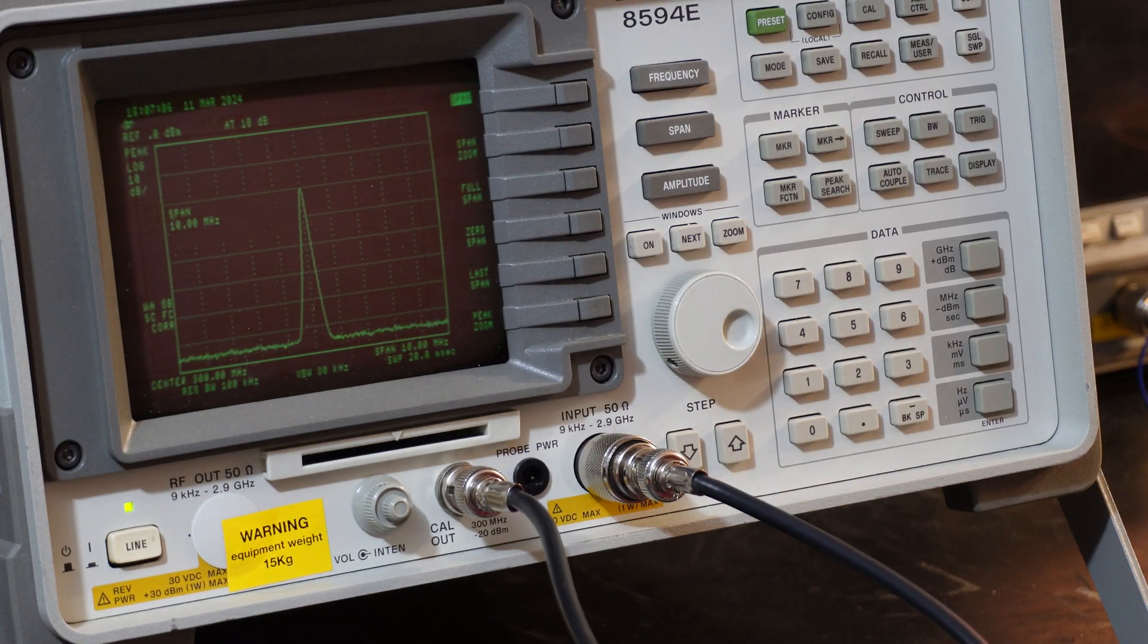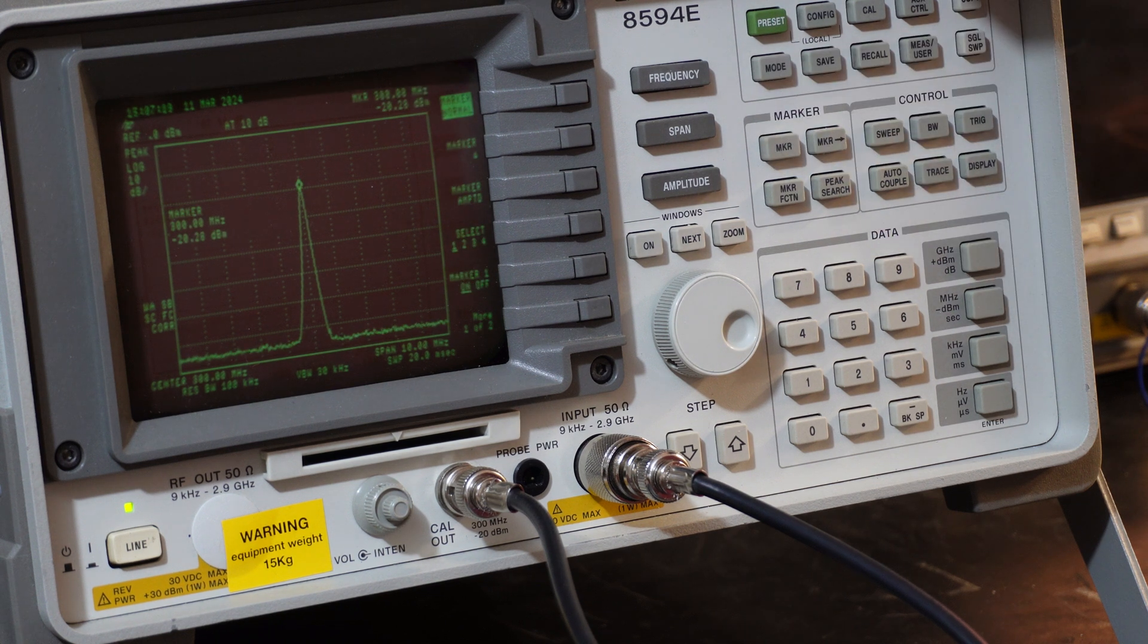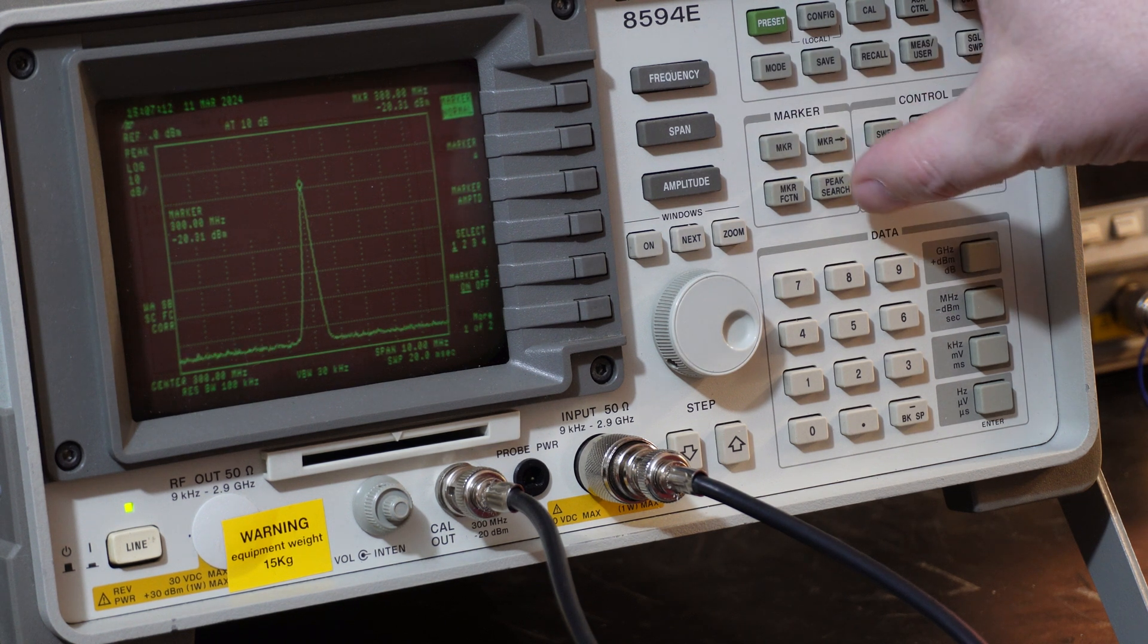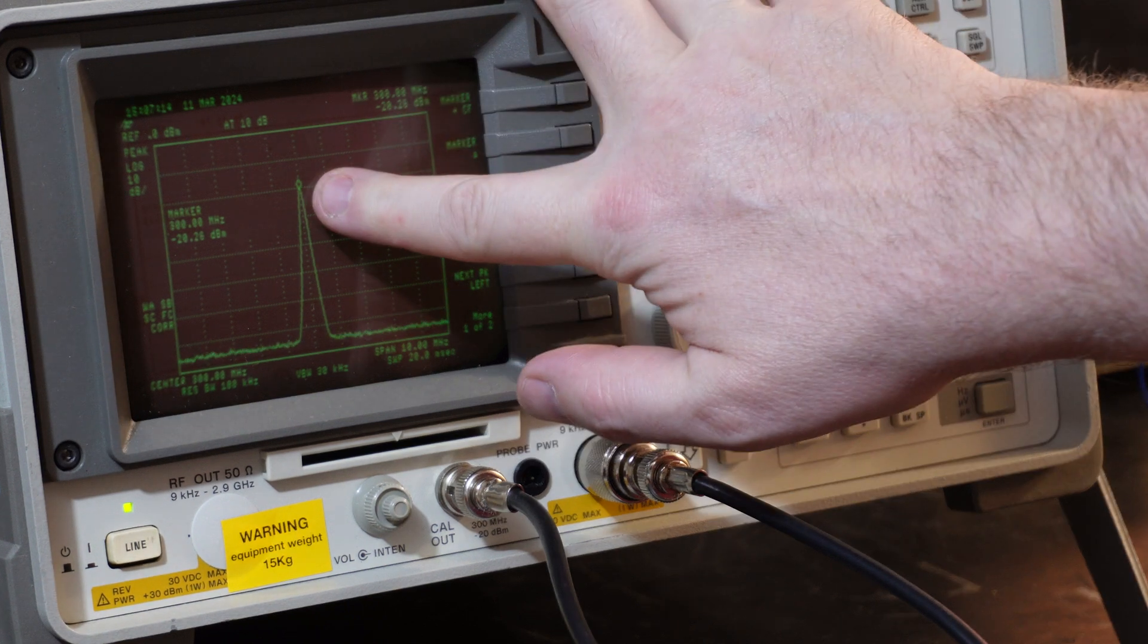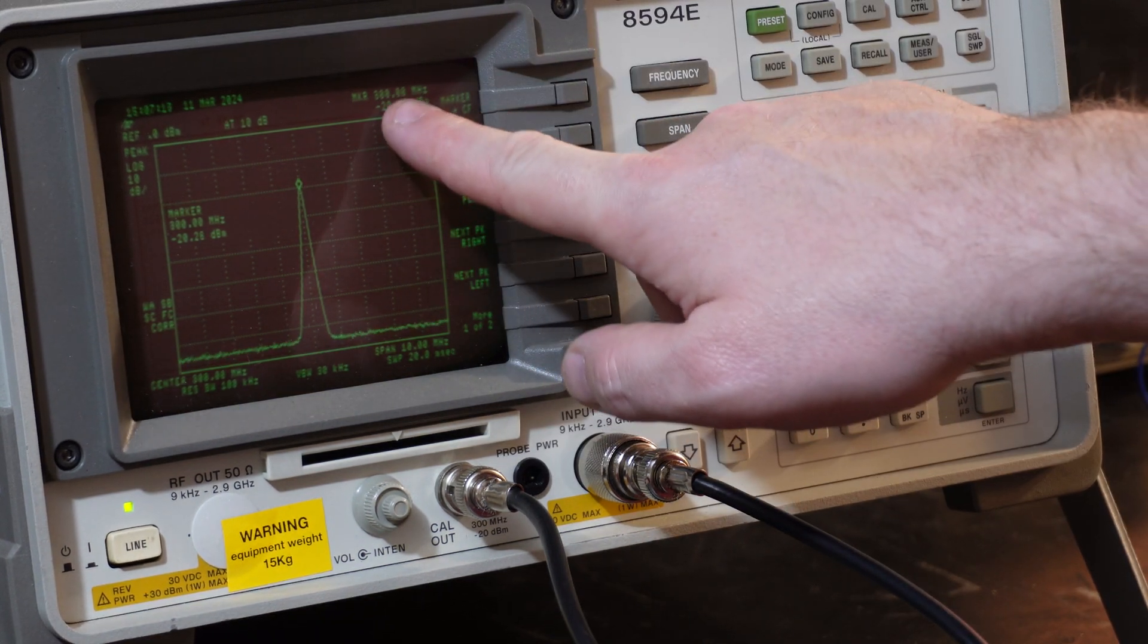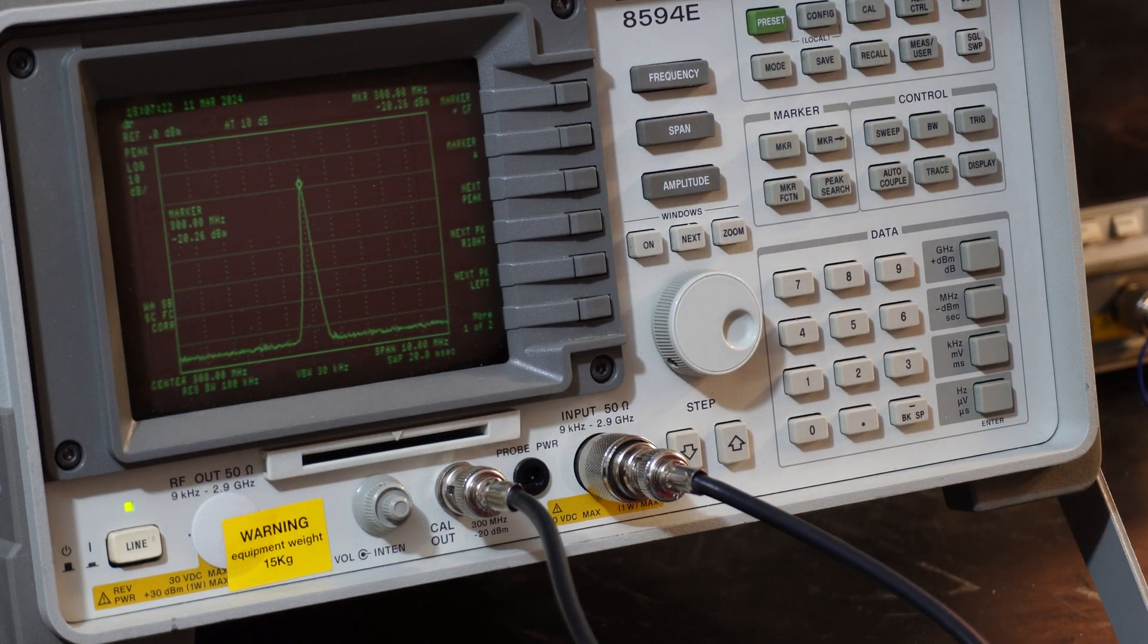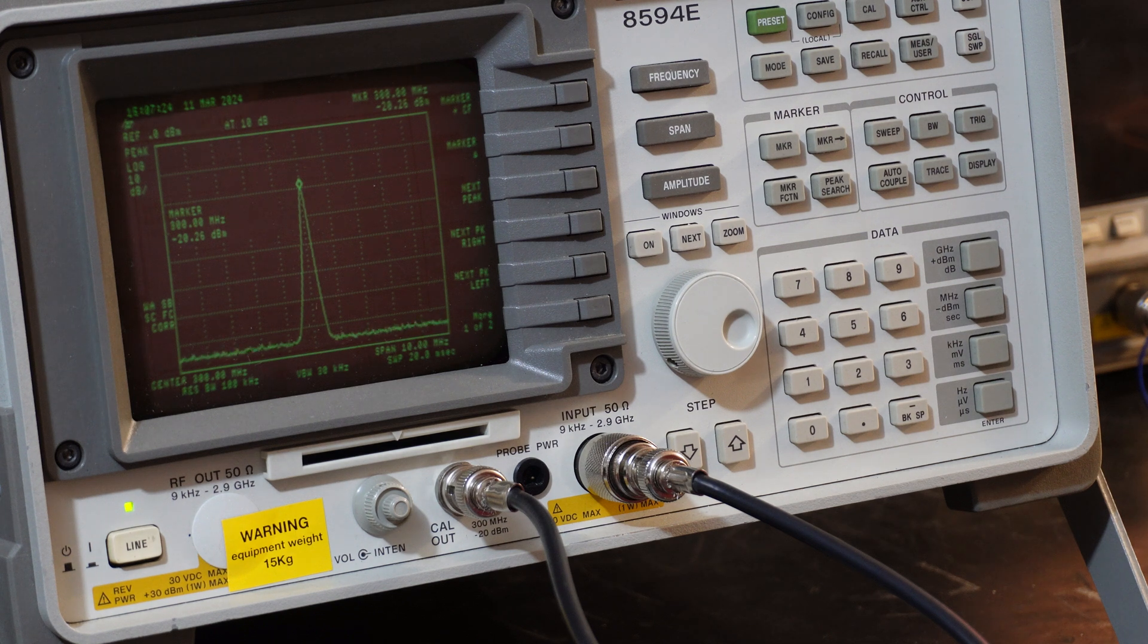What we can do is bring up our marker and do peak search. We're on the peak, so we can see up here 300.00 megahertz at minus 20.2 dBm. We're getting a nice frequency reading there.